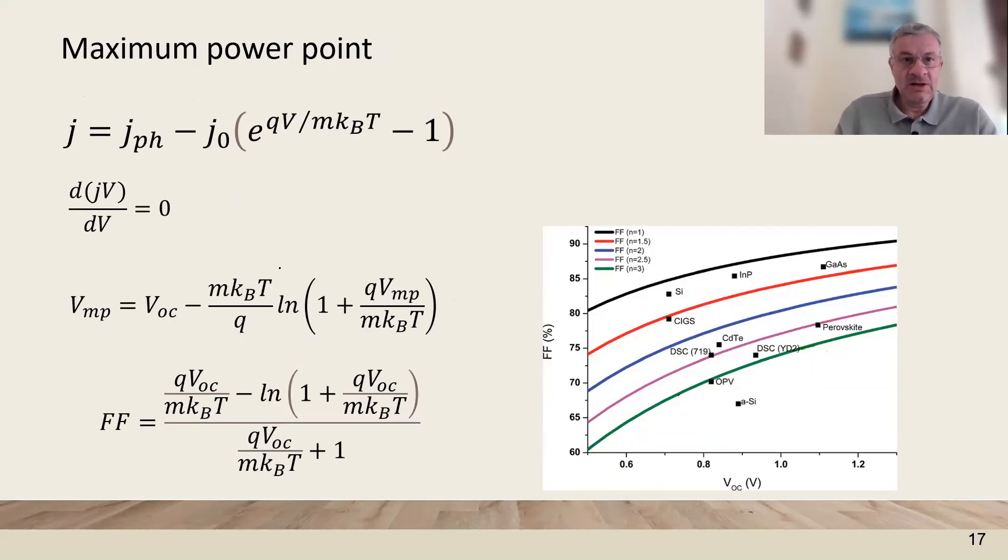Starting from a diode equation with an ideality factor M, we can use the maximization of power and obtain an approximate formula that gives the fill factor only in terms of VOC and the ideality factor M.